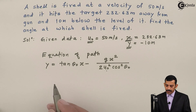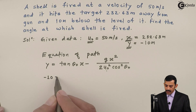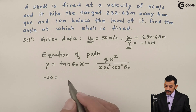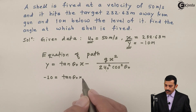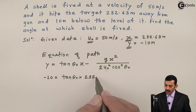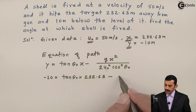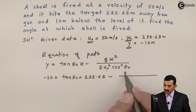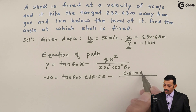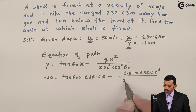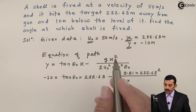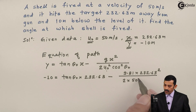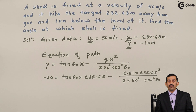The equation of path is: Y = tan(θ₀)·X − [G·X²] / [2·U₀²·cos²(θ₀)], where Y is vertical displacement, X is horizontal displacement, θ₀ is the angle of projection, and U₀ is the velocity of projection. Substituting the values: Y = −10, X = 232.63, G = 9.81 m/s², and U₀ = 50 m/s, so U₀² = 2500.